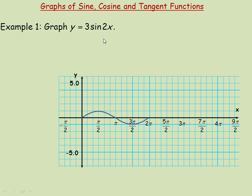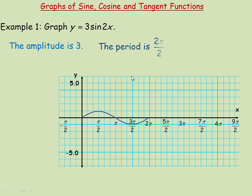Now look at the different transformations from y equals sine x. The 3 here is the amplitude for the sine or cosine function, so the amplitude is 3. The amplitude of the normal sine function is 1, so instead of being 1 above the axis through the middle, it'll be 3 above. The 2 in 2x changes the period. To calculate the new period, we take 2 pi and divide by 2, giving a period of pi.